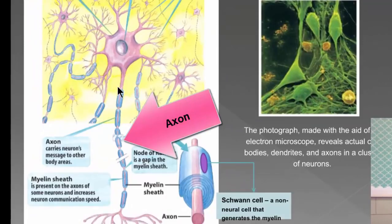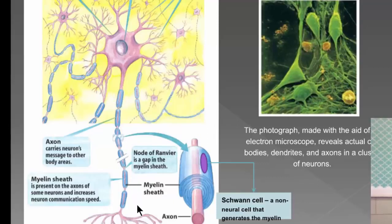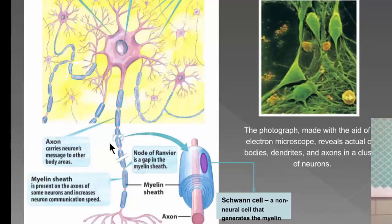The axon carries the neuron's message to other body areas. These can be very long, though they can be shorter too — they're the long, skinny part coming off of the soma. The little blue parts that go down the axon are called the myelin sheath. It's present on the axons of some neurons and it increases neuron communication speed. Myelin is simply fatty tissue that insulates the axon and speeds up the transmission of the message.